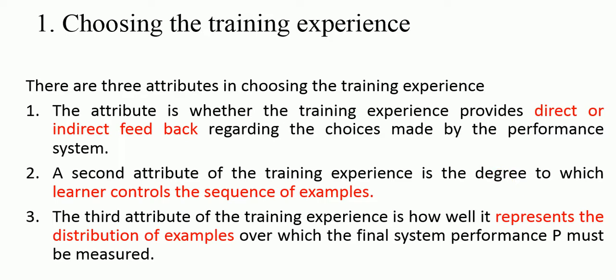The first part is choosing the training experience, and there are three attributes to consider. The first attribute is whether the training experience provides direct or indirect feedback regarding the choices made by the performance system. So here we are looking at direct and indirect feedback.